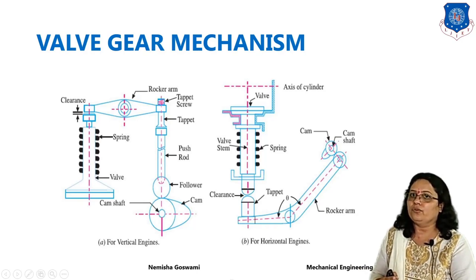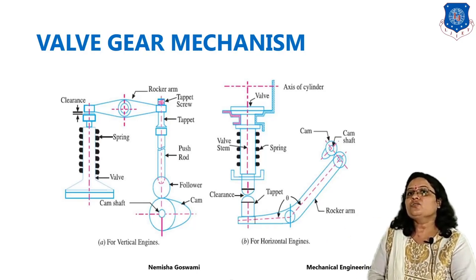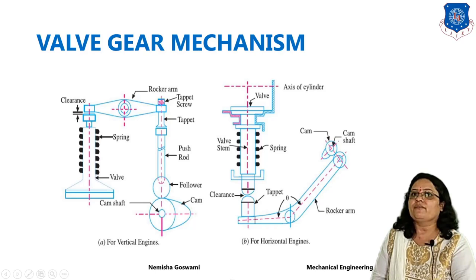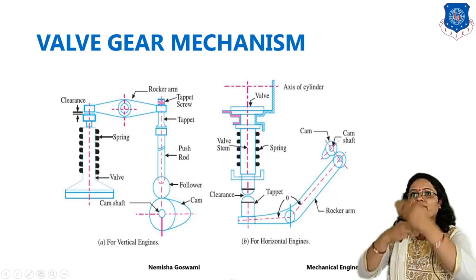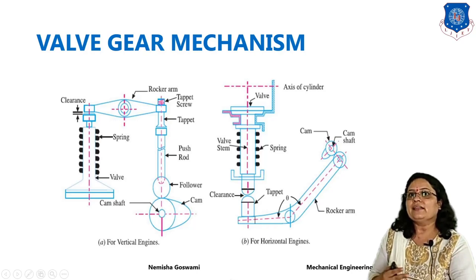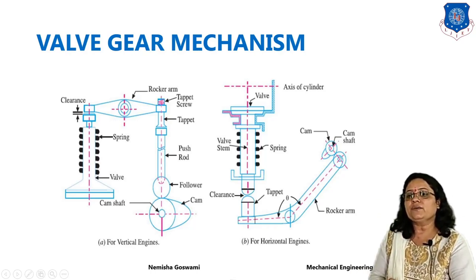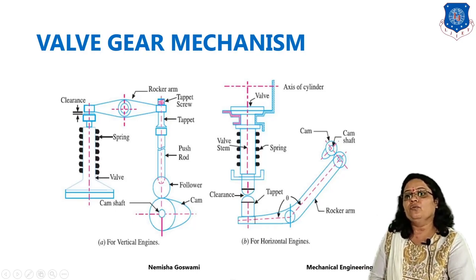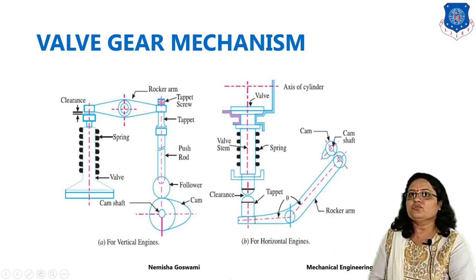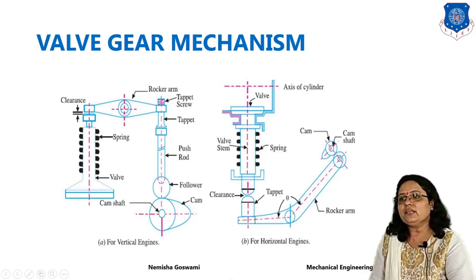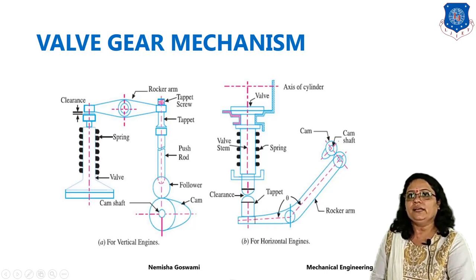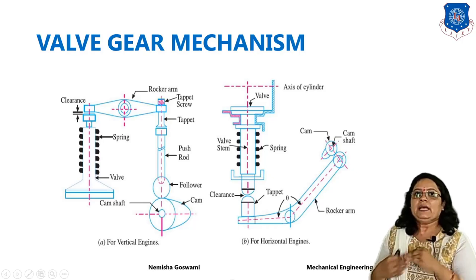When the cam is mounted on the camshaft and the camshaft rotates, the cam also moves and transfers its motion to the follower, which is then transferred to the push rod. From the push rod the motion goes through the tappet to the rocker arm. The rocker arm transfers the force and compresses the spring, causing the valve to open.